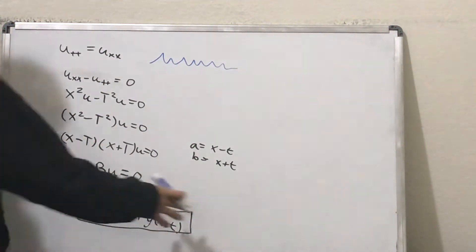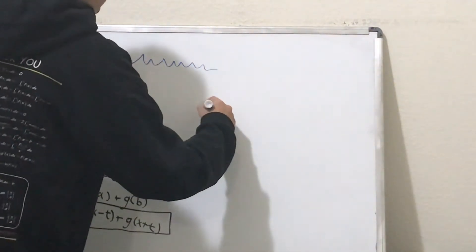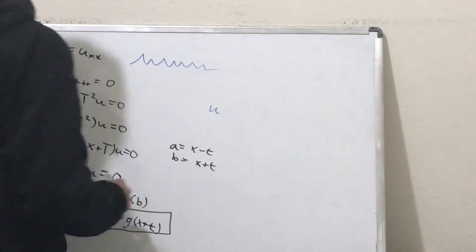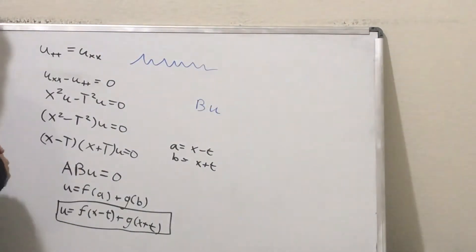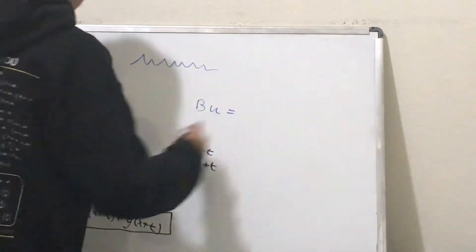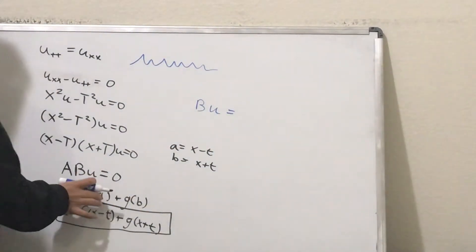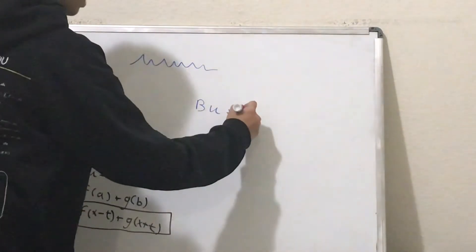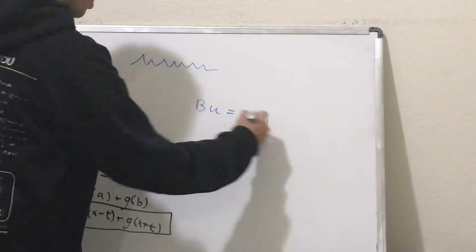So, it makes sense because if you take u, if you take, let's say, ∂b u, you take the derivative with respect to b, this f of a just goes away because it's a constant with respect to b. And what we get is g prime b.